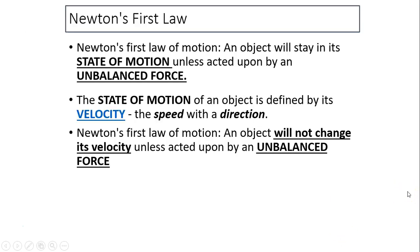Newton's First Law states an object will stay in its state of motion unless acted upon by an unbalanced force. The state of motion just means its velocity. Velocity is a vector quantity with magnitude — which is speed — and direction. So to restate Newton's First Law: an object will not change its velocity unless acted upon by an unbalanced force.